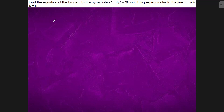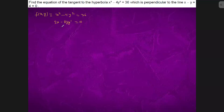We will find the equation of the tangent to the hyperbola by differentiating. The equation is f(x, y): x² - 4y² = 36. Differentiating gives 2x - 8y·y' = 0, so y' equals x divided by 4y.